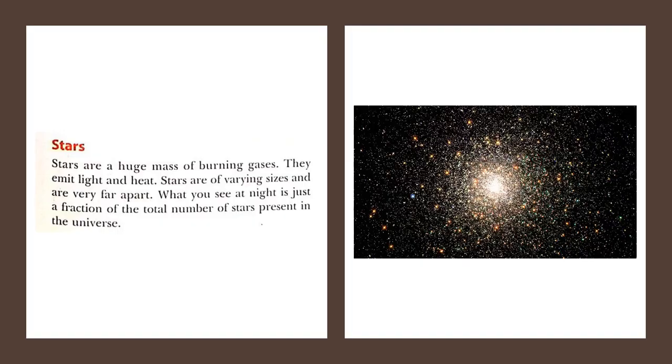Stars are huge mass of burning gases. They emit light and heat. That's the important point to notice: stars have their own heat and light whereas planets do not have heat and light. We get the heat and light from the stars. Stars are of varying sizes and very far apart. Some stars are very big, some small, and they are situated at very big distances.